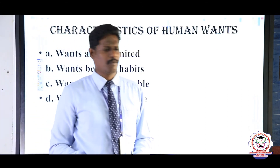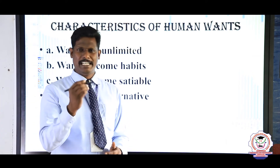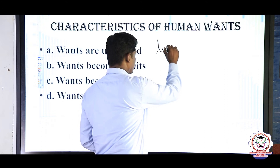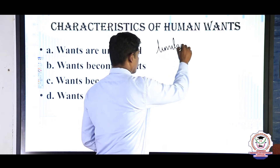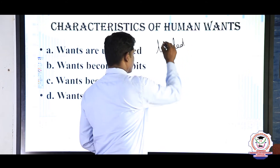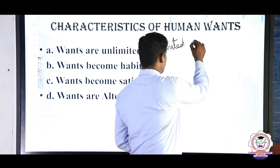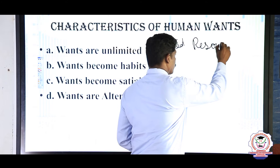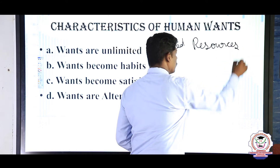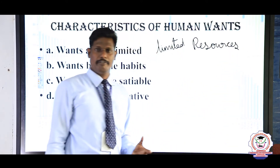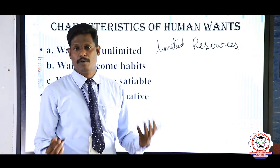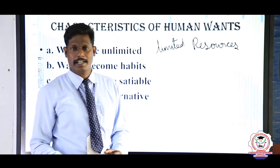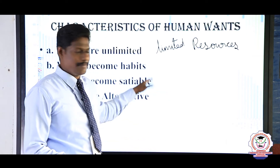What are the characteristics of human wants? First: wants are unlimited. We have only a limited amount of resources to achieve the unlimited wants of a human being. That is the first important characteristic — wants are unlimited.